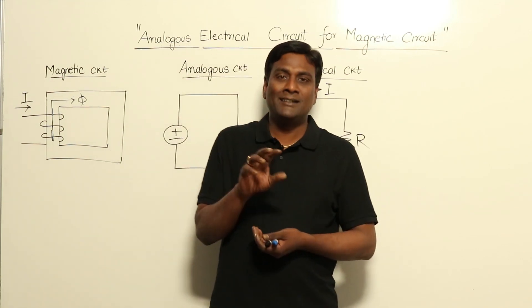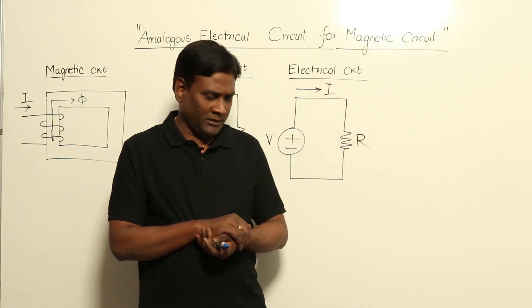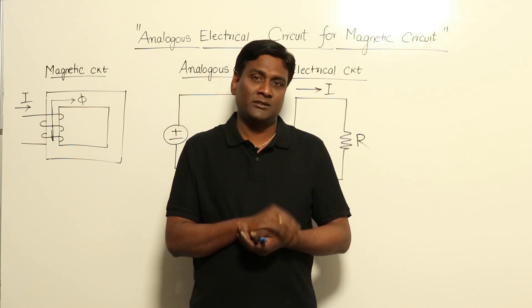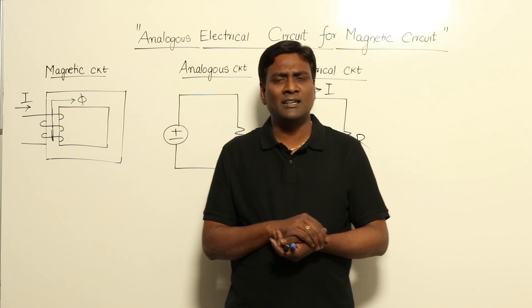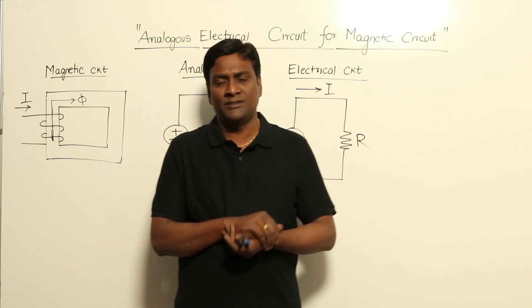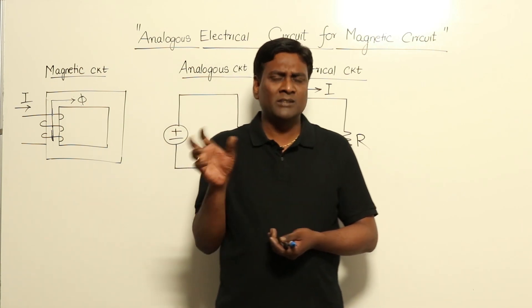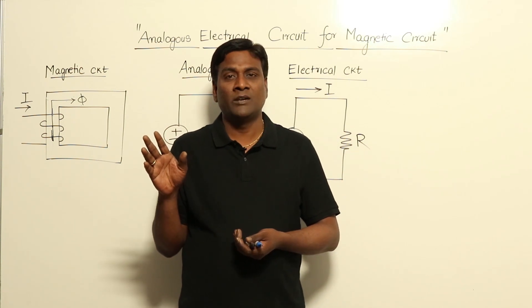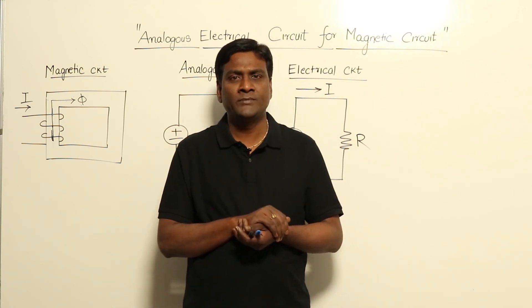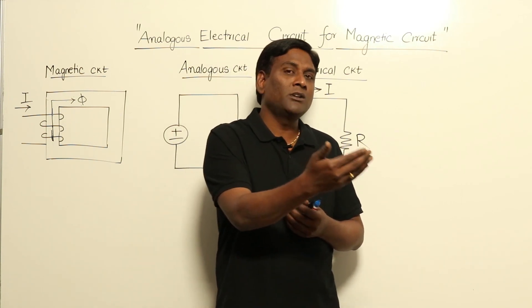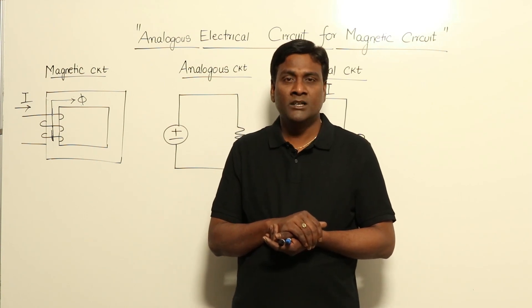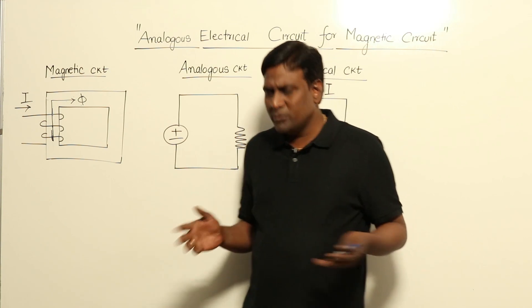Let us see how magnetic material can be modeled in terms of an electrical circuit. In control systems, mechanical systems are converted using force-voltage or force-current methodology — mass becomes inductance, friction becomes resistance, and spring constant becomes capacitance. We are electrical engineers, so if we want to analyze mechanical systems, we search for a bridge between mechanical and electrical. Similarly, for magnetic systems.